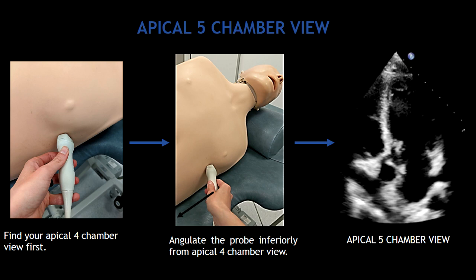Next is the apical five-chamber view. To obtain this view, you have to find the apical four-chamber view first. Once you have your apical four-chamber view, you are going to angulate the probe inferiorly. With these two steps, you are going to be able to get your apical five-chamber view. Remember that the index marker should still be pointing to the couch.